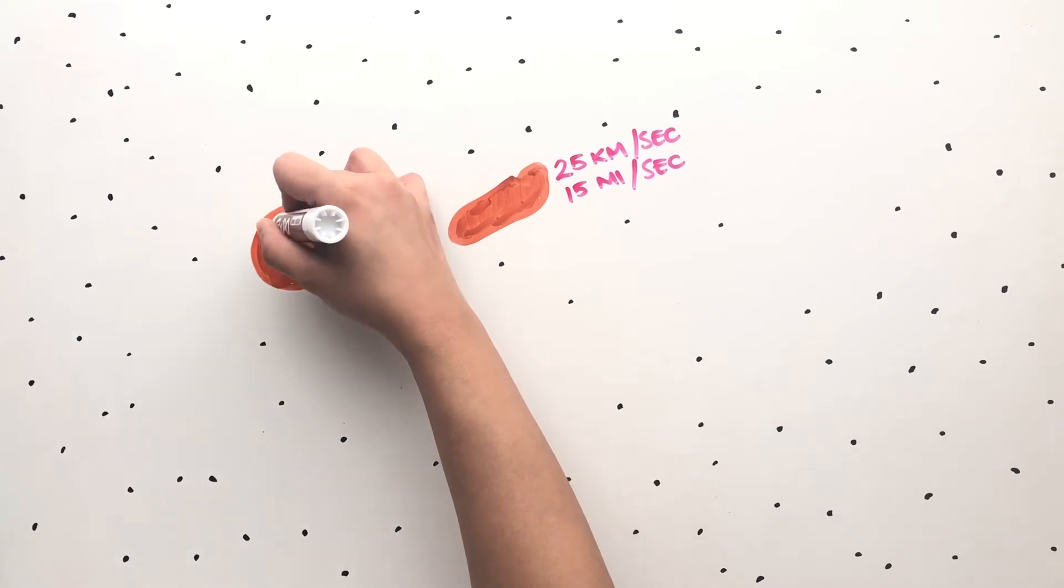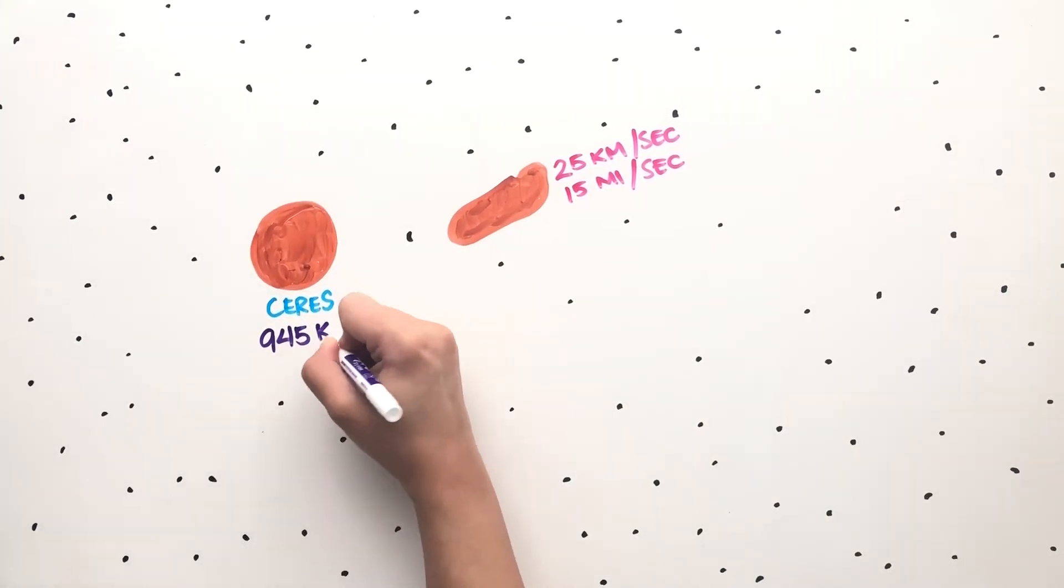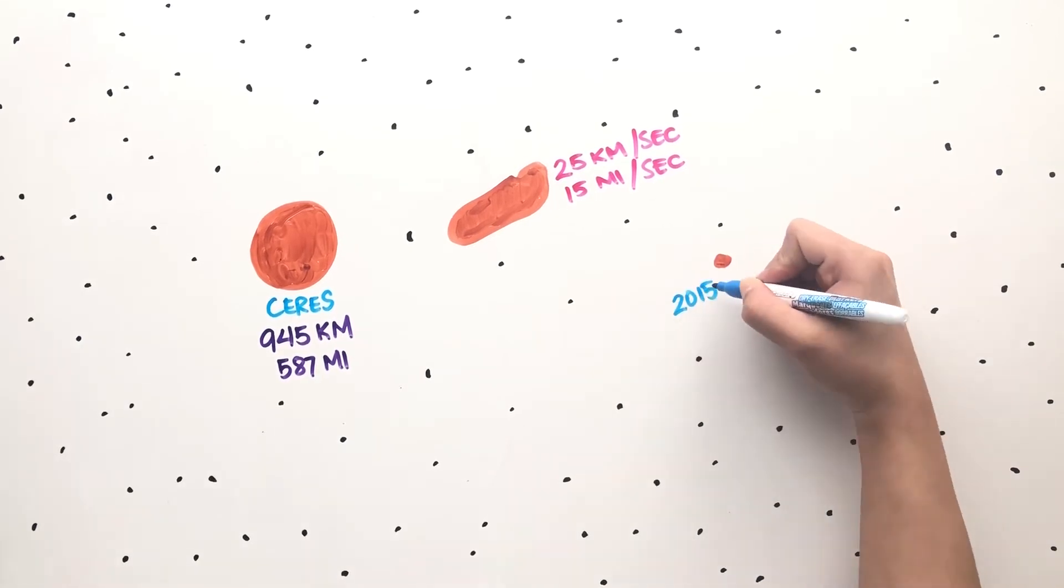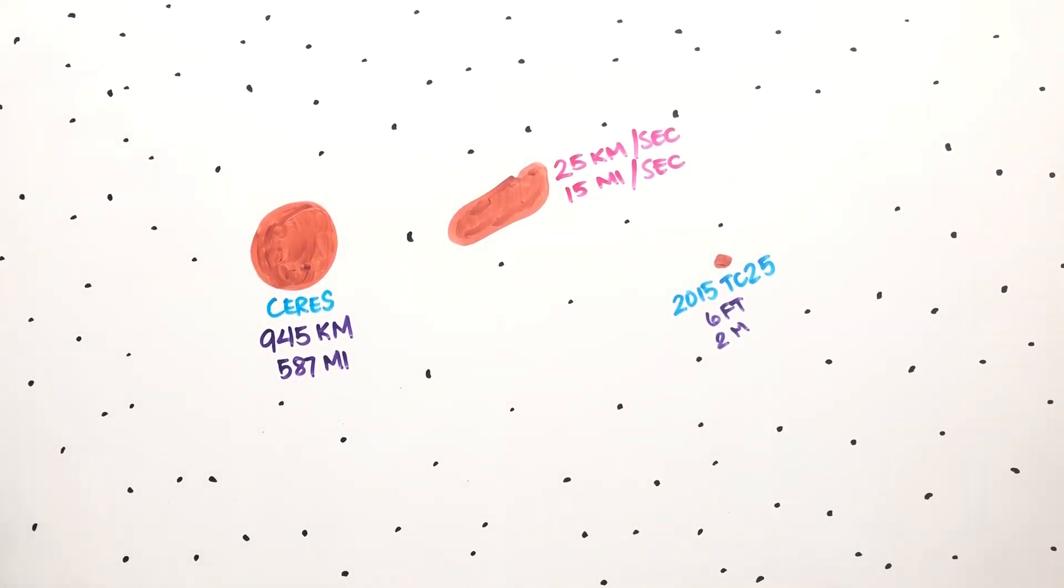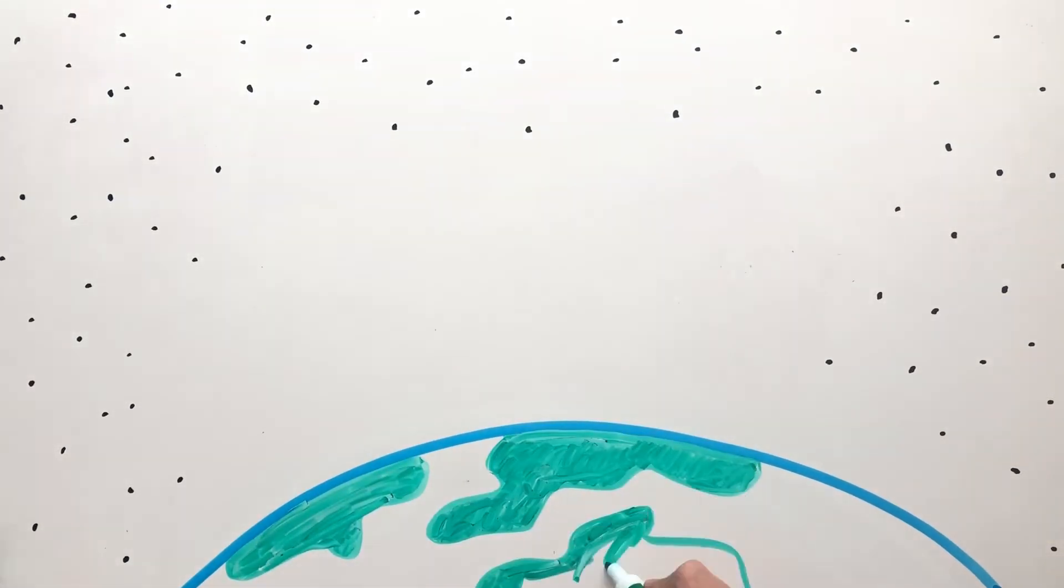The largest known asteroid is Ceres and has a diameter of 945 kilometers. The smallest is 2015 TC-25 and is only 6 foot wide. It was observed when it passed by the Earth in October 2015.